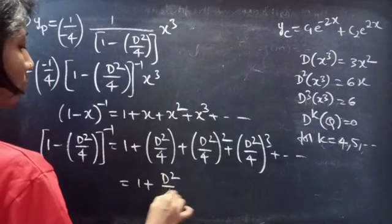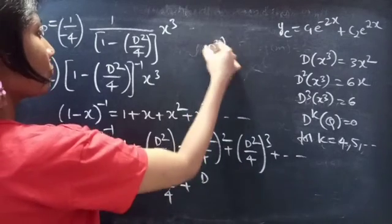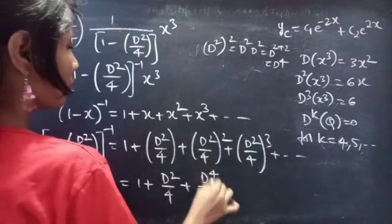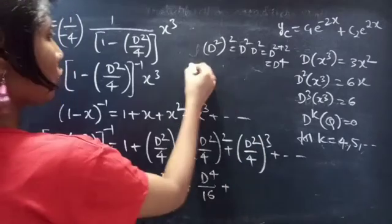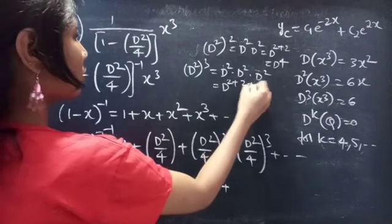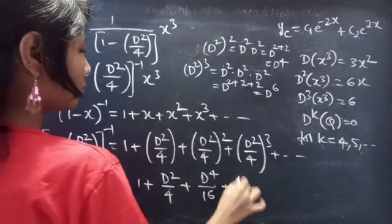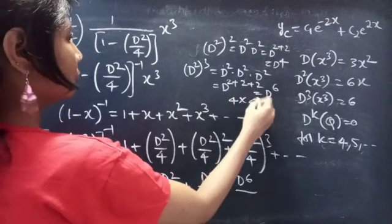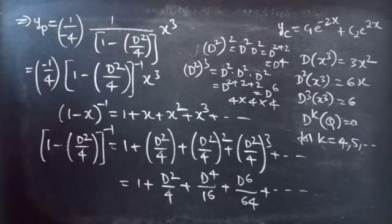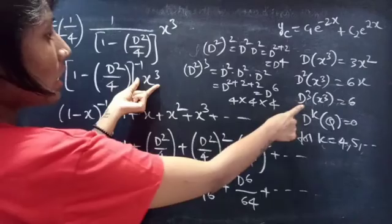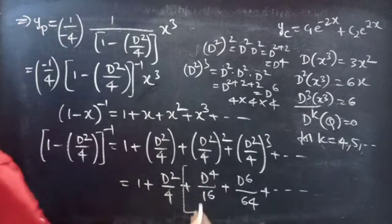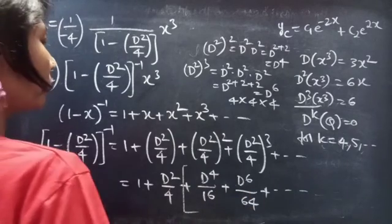This equals 1 plus D squared by 4 plus D to the power 4 by 16 plus D to the power 6 by 64 plus so on. Since D to the power k of x cubed equals 0 for k equals 4, 5, and so on, we can neglect higher powers from D to the power 4 onwards, because they become 0 when applied to Q.